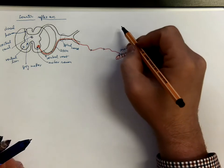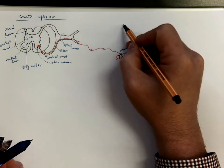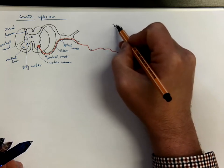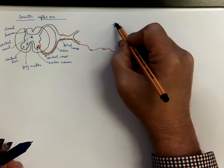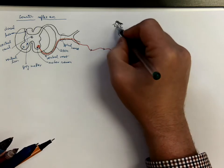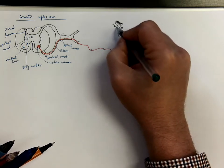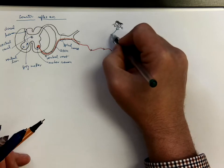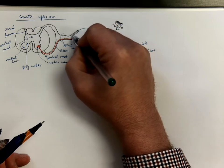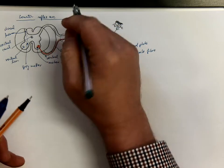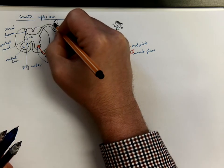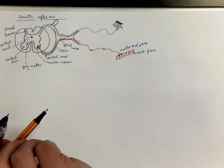So this is the executive part of the arc. And let's consider the sensory part with the somatic receptors in the skin. This would be the epidermis and the dermis forming the skin. And here we have, for example, the free nerve endings as the receptors for pain. And this is actually a dendrite of a neuron, the body of which is sitting here in the spinal ganglion.